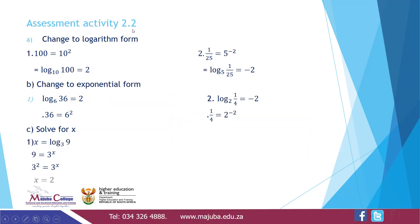Assessment activity 2.2: Change to logarithms. Number 1: 100 equals 10 squared gives log base 10 of 100 equals 2. Number 2: 1 over 25 equals 5 to the minus 2 gives log base 5 of 1 over 25 equals negative 2. Change to exponential form: log base 6 of 36 equals 2 gives 36 equals 6 squared. Number 2: log base 2 of 1 over 4 equals negative 2 gives 1 over 4 equals 2 to the negative 2.